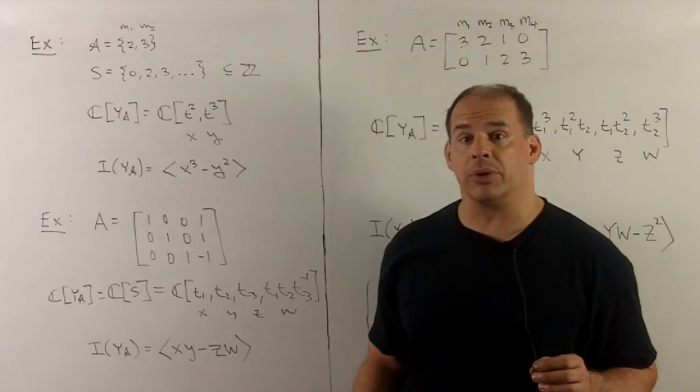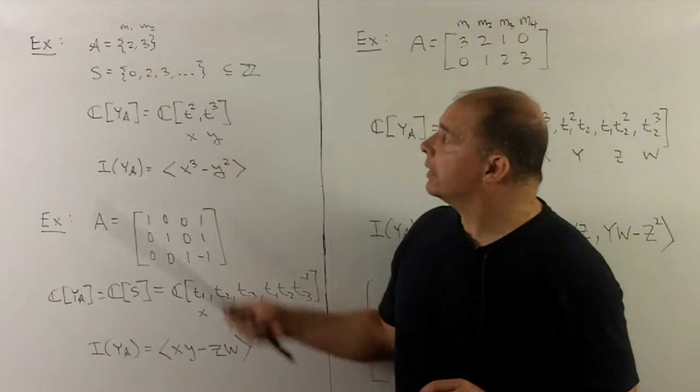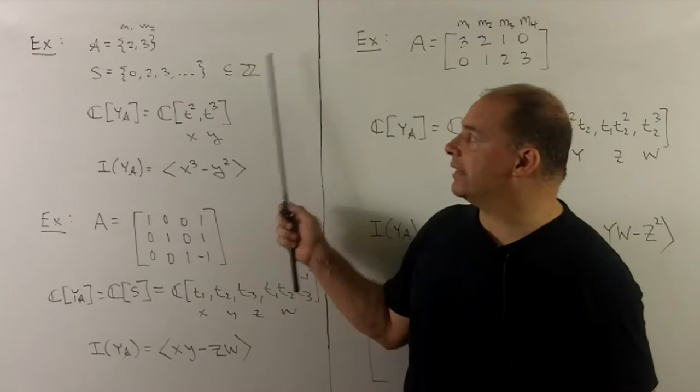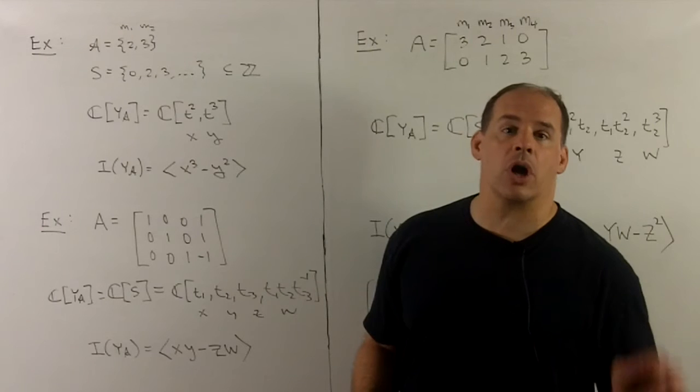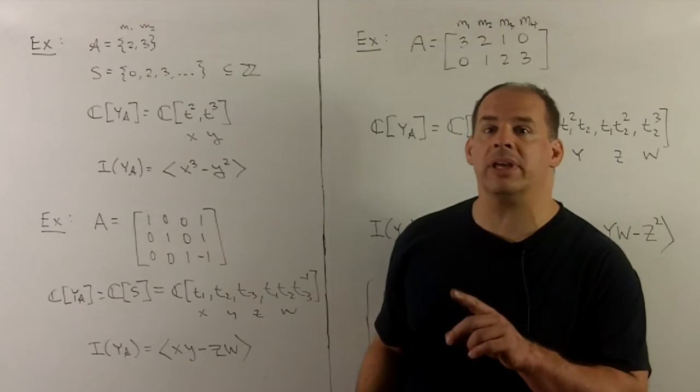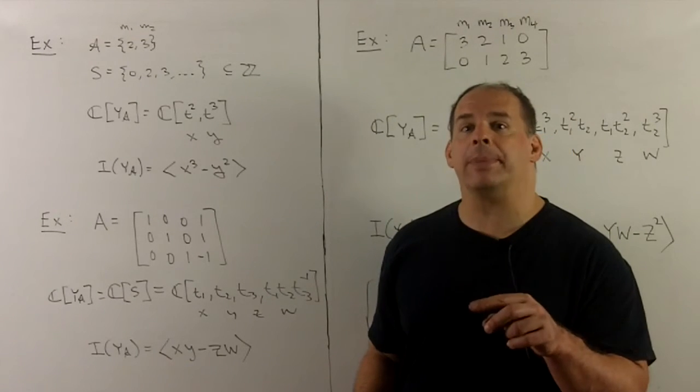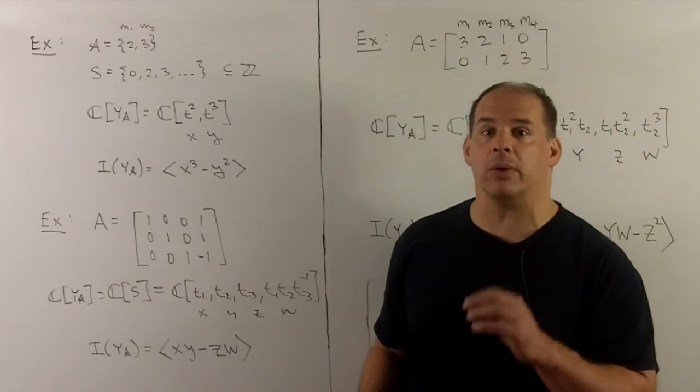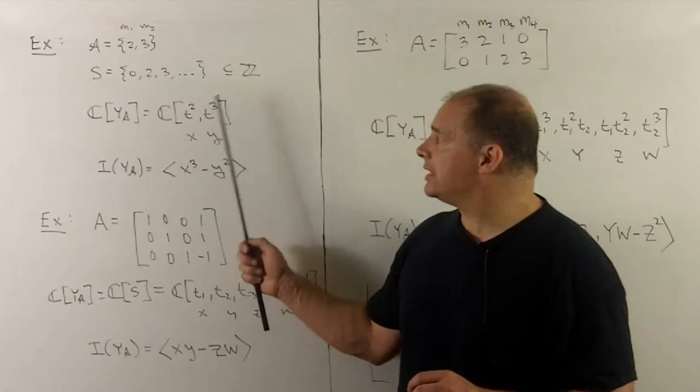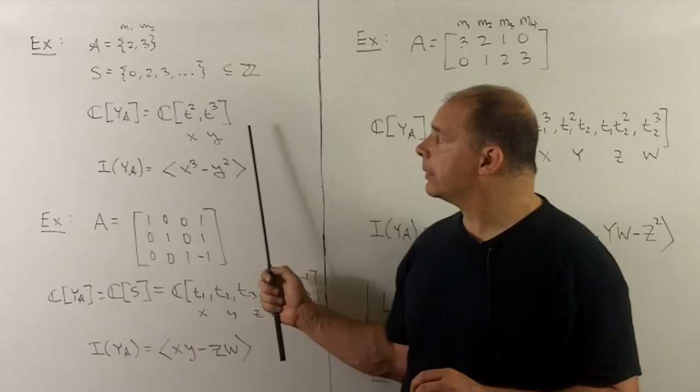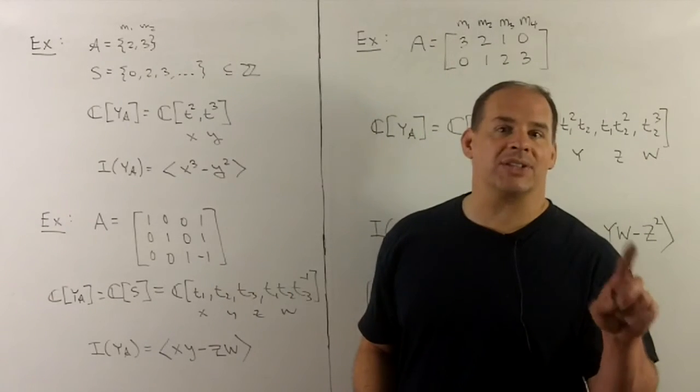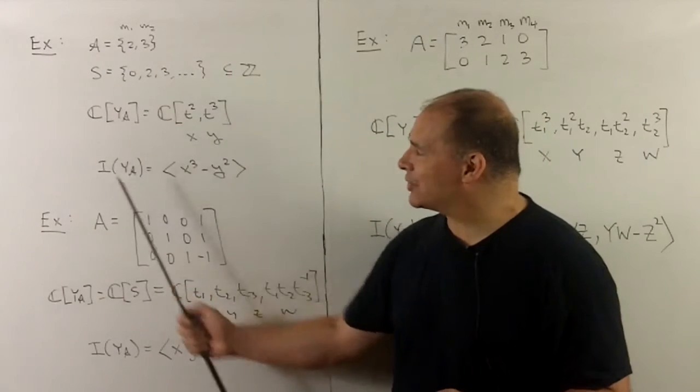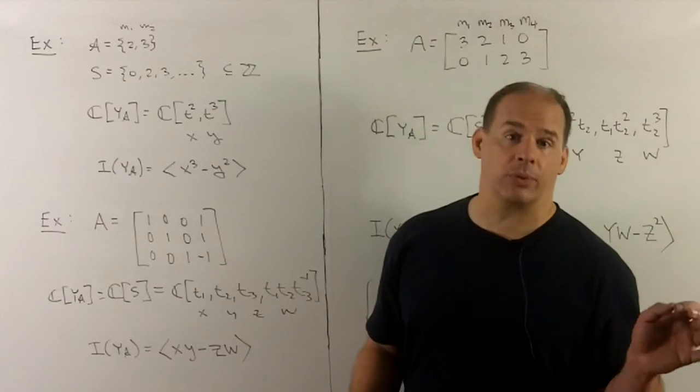Let's look at some non-trivial examples. First, we have A equal to 2, 3 in the integers, so we'll take the N-span. Then if we want the coordinate ring for the corresponding Y sub A, all we do is we take the map of Phi sub A and pull off its coordinates, and then take the polynomial ring generated by those. So if C bracket T squared T cubed, if we label those X and Y, then the relation is X cubed minus Y squared, that gives us our ideal, and then we have our cubic from before.